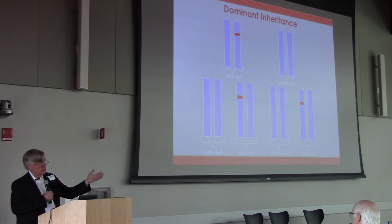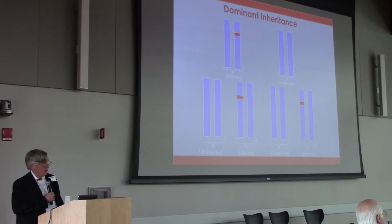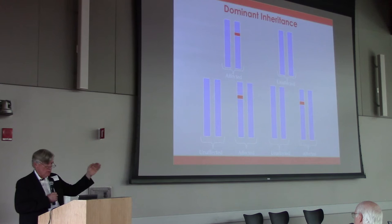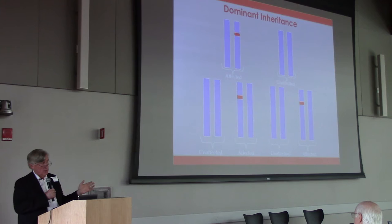Once you have a dominant mutation, you can pass it on to your kids. The father passes one of his chromosomes to all of his children, so there's a 50/50 chance he'll pass on the one without the genetic change or the one with it. Each child who receives the genetic change is going to be affected.